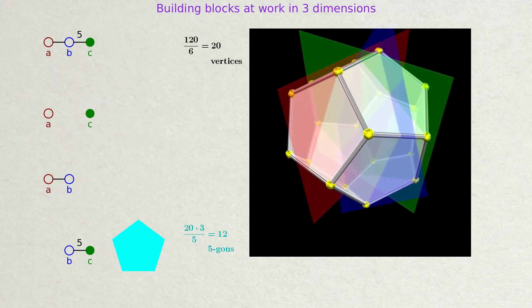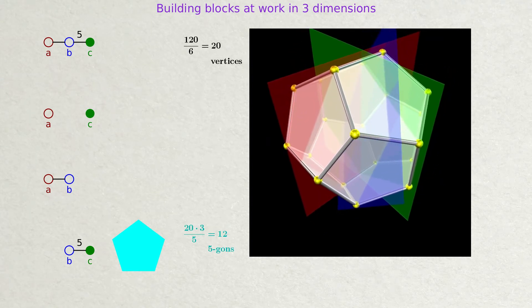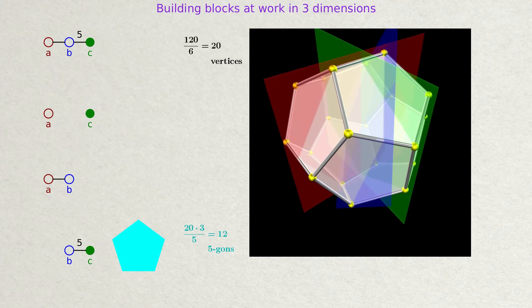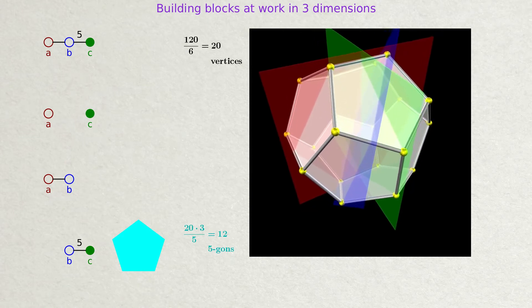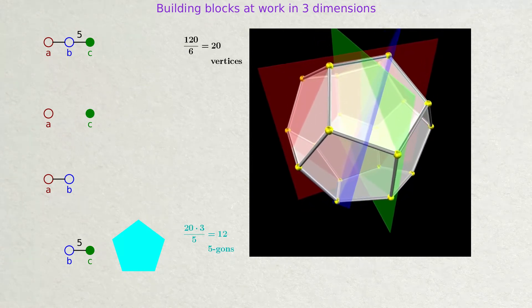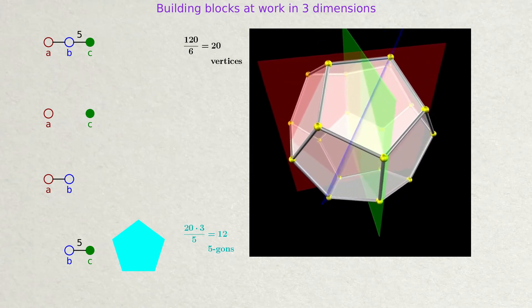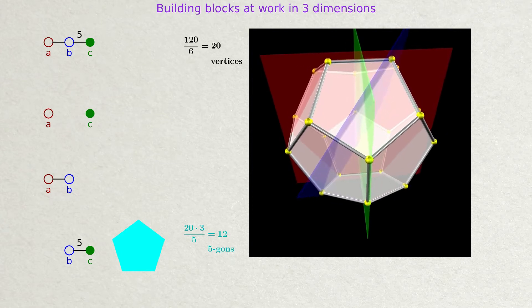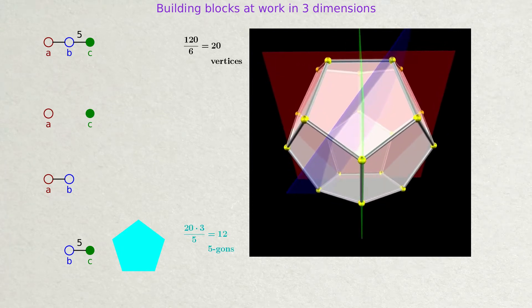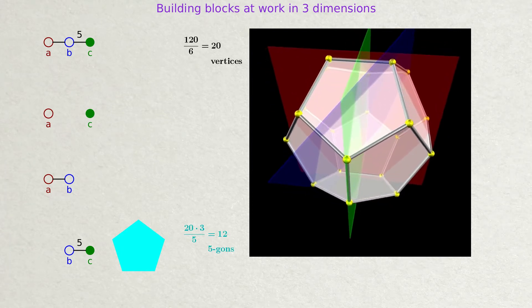You might wonder why there's so much talk about three-dimensional objects — where are the promised four-dimensional polytopes? Well, the three-dimensional solids that are shown first will be the surfaces of the four-dimensional objects that will follow shortly.